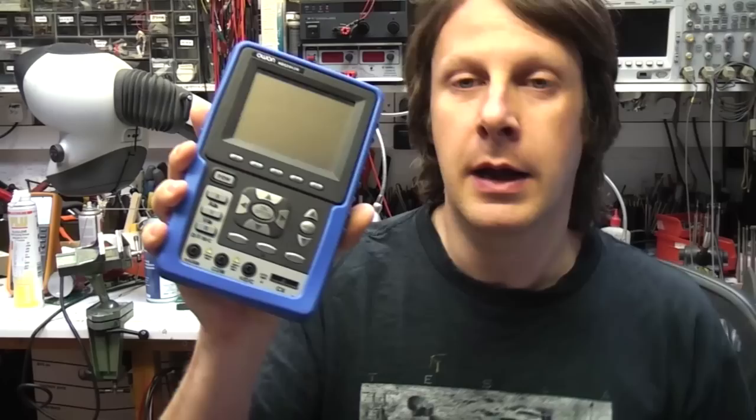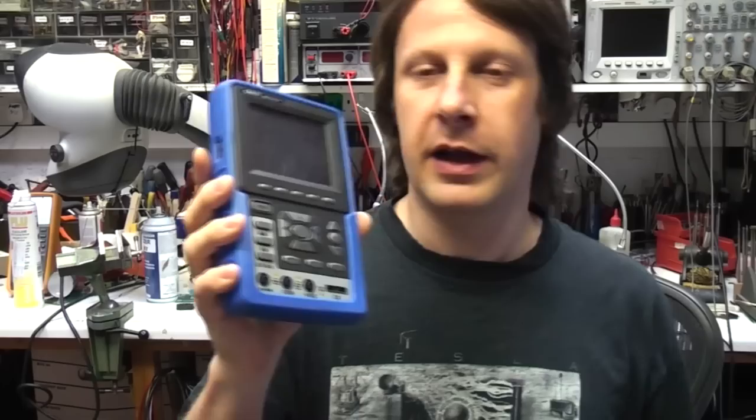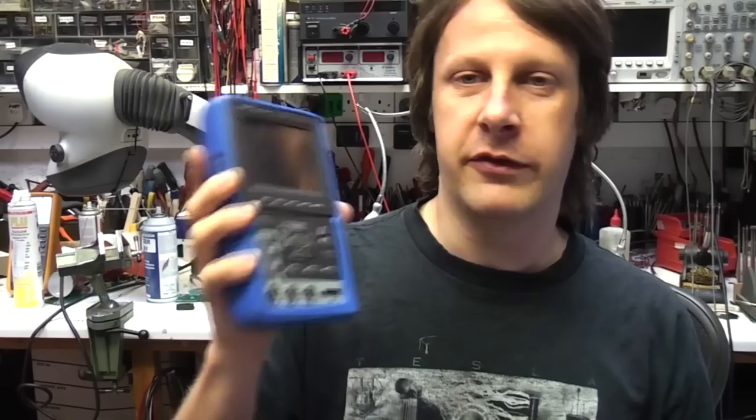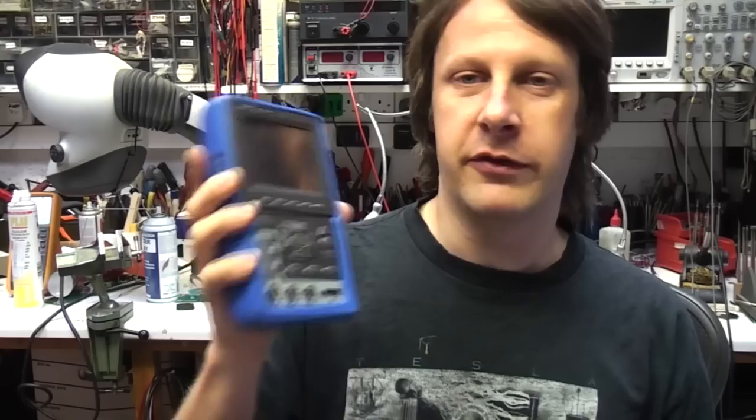I took quite a hard look at what was on the market in terms of small scopes. There was the Fluke scope meters which were nice but very expensive. Agilent had quite a nice one but it was a bit big and chunky and there's a few features it didn't have. For example, there's no trigger hold off on it which I would expect on a scope for the price.